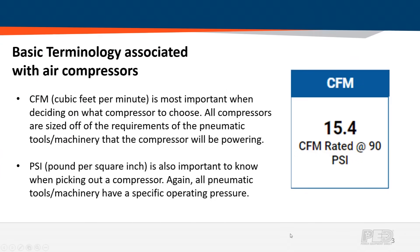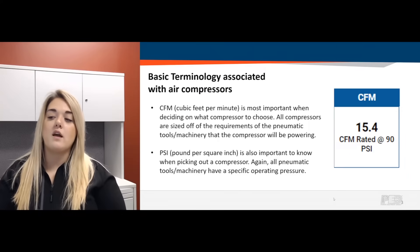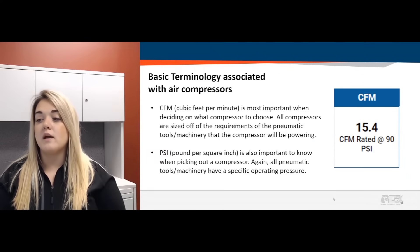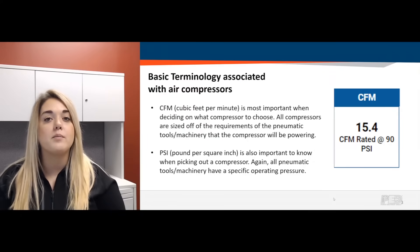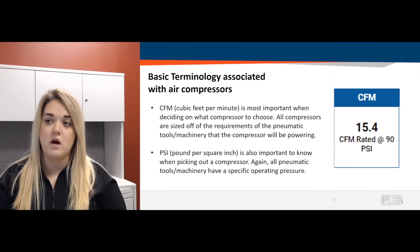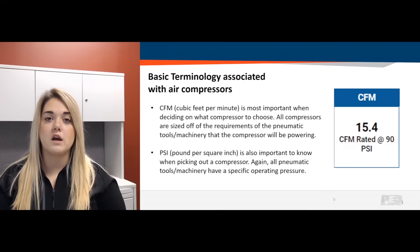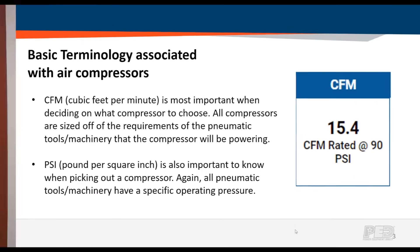Knowing some basic terminology associated with air compressors is very important because it helps us help you decide what air compressor is going to work best for your application. First off, very important: CFM, cubic feet per minute. All compressors are going to be sized off of the requirements of the pneumatic tools and machinery that the compressor is going to be running, so knowing the CFM demands of your tools and machinery is extremely important. Next would be PSI, pounds per square inch. It's just as important to know your operating pressure of your tools and machinery, because we want to make sure you purchase an air compressor that meets your needs in both of those areas.